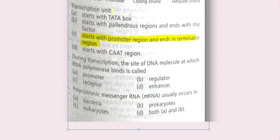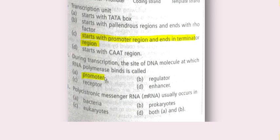Next question: during transcription, the site of the DNA molecule at which RNA polymerase binds is called? The options are promoter, regulator, receptor, and enhancer. The answer is A — the promoter — which is the region where RNA polymerase binds, after which unwinding of the DNA takes place.